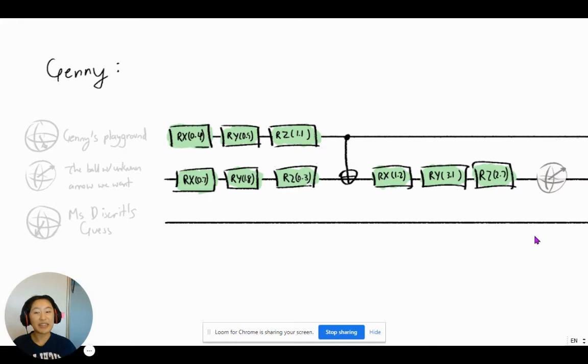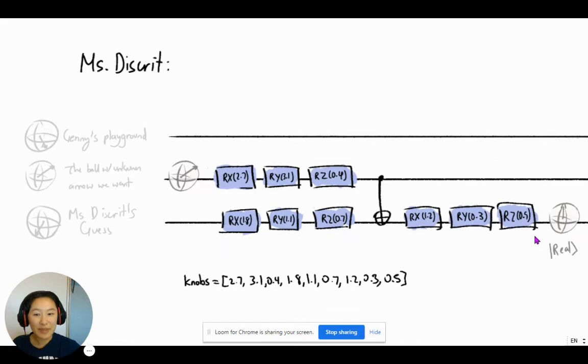And at the core, every human is a series of tunable knobs. Like when Jennie is happy, he will act one way and spit out one type of ball with unknown arrow. And when Jennie is sad, he will spit out a different type. And our goal is that we will take these knobs, find the optimal combination that will output the ball with unknown arrow that tricks Mrs. Discrit. And we will find this optimal combination using something such as gradient descent, hence putting machine learning into quantum machine learning.